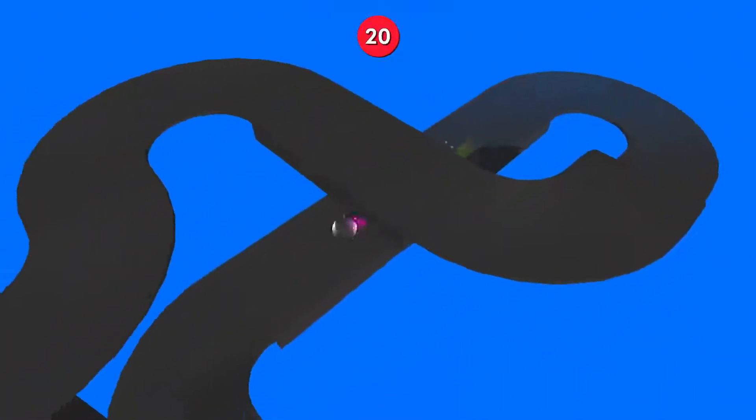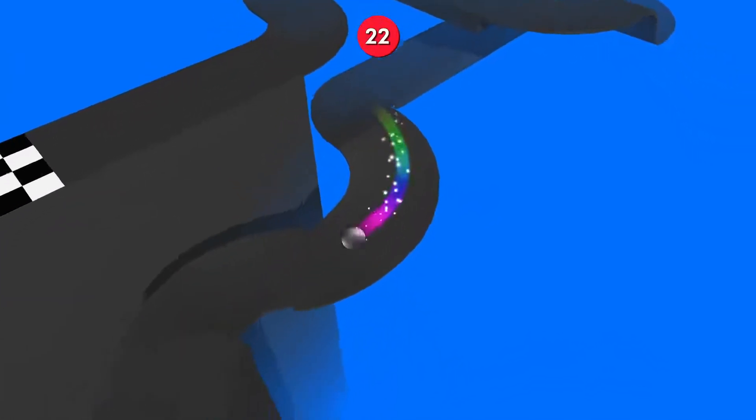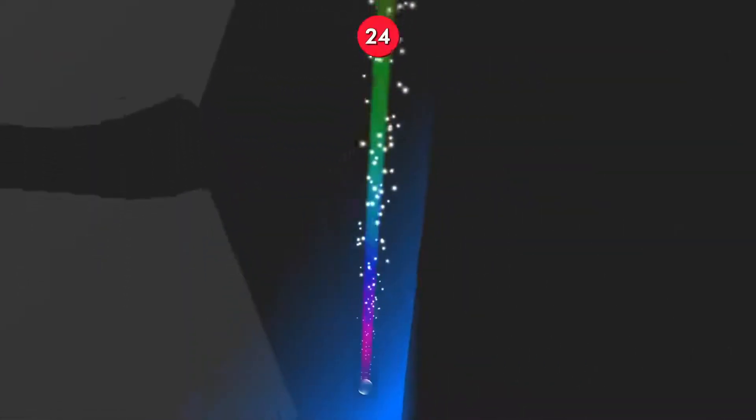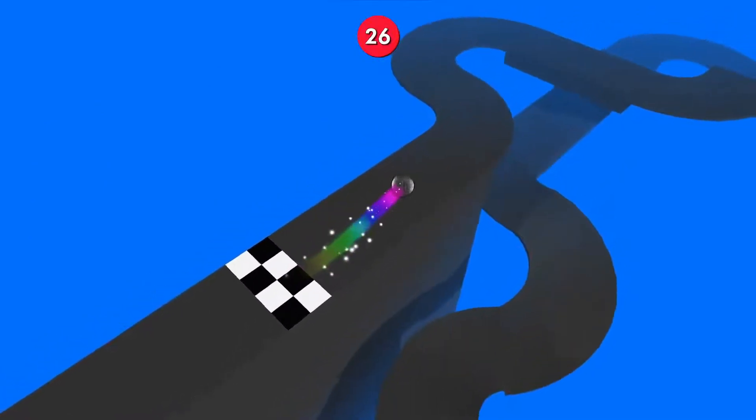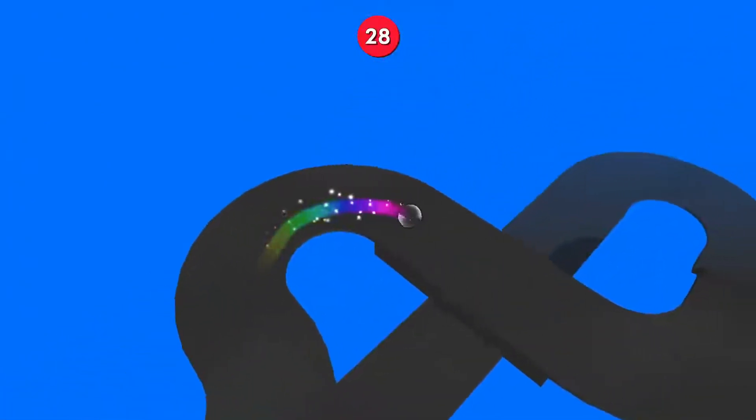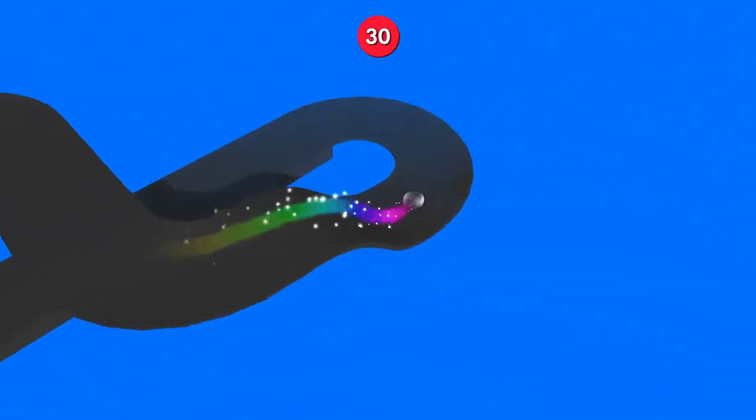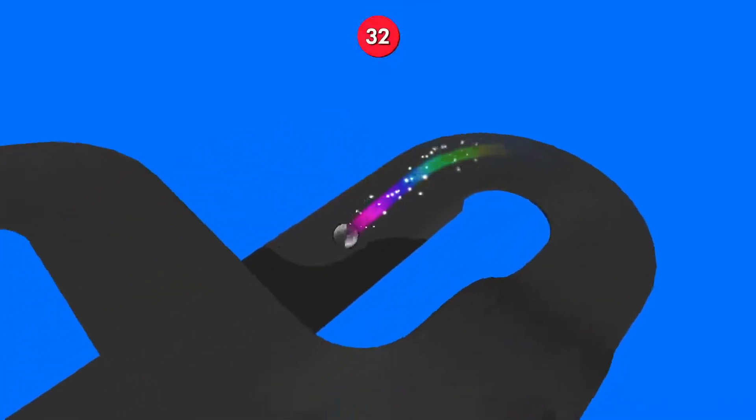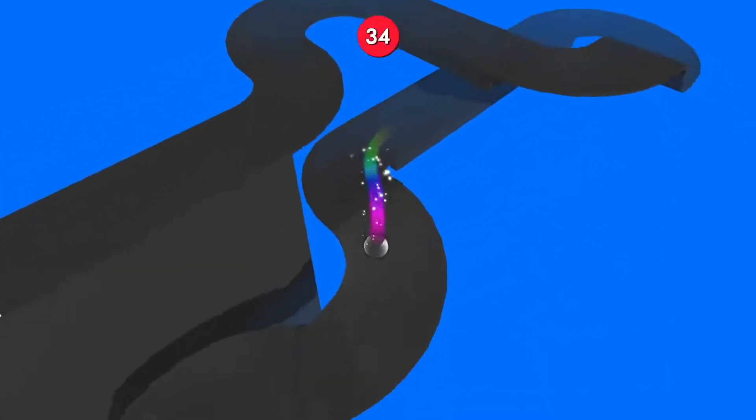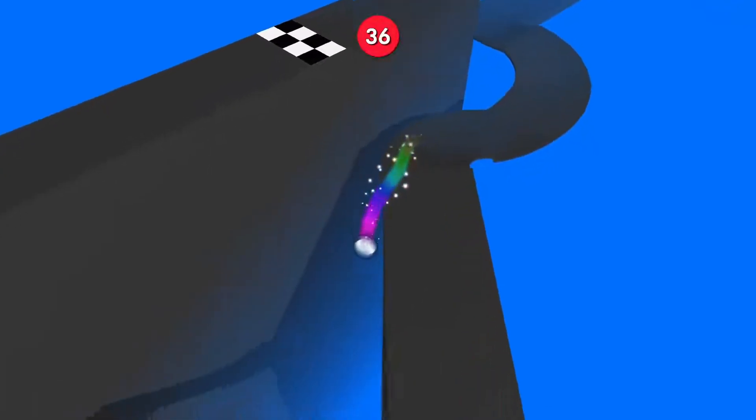Then you can build up speed towards the five six seven chicane. Do not fall into the void because there's no checkpoint. Five, six, seven, oh.